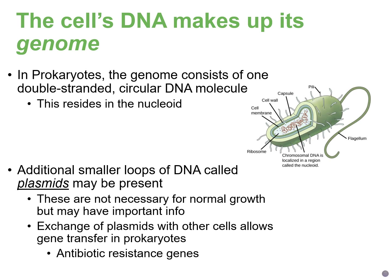Going back and reviewing prokaryotes — remember prokaryotes like bacteria have just one double-stranded circular DNA molecule. And since prokaryotes do not have a nucleus, this is found in the nucleoid region of the cell. In some prokaryotes they also have smaller pieces of DNA known as plasmids. These are not critical for survival of the cell, but they usually have additional favorable characteristics expressed by these genes.